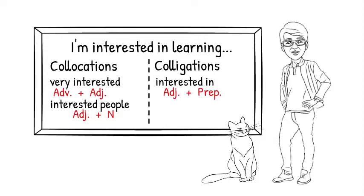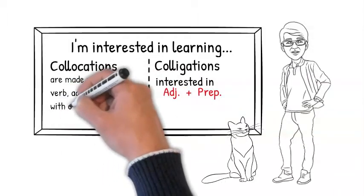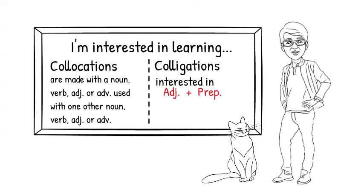Maybe you have figured it out. Collocations are made up of two words, like very interested or interested people. Collocations are made with a noun, verb, adjective, or adverb used with one other noun, verb, adjective, or adverb. In other words, two words from the four main parts of speech.